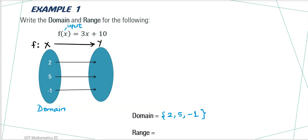Now, to find to which number this 2 maps to, we have to check. We have f(x) equal 3x plus 10. This is our function.